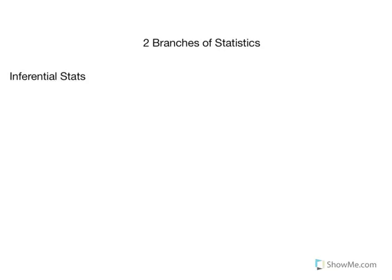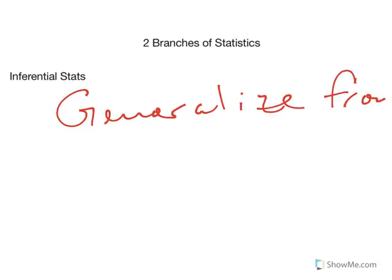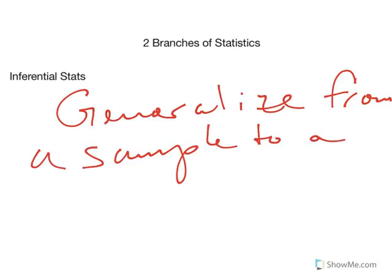Another way to use statistics is the branch called inferential statistics. Inferential statistics do something that is, in a way, much more interesting, more complicated, but also incredibly useful. It's really the backbone of all of psychology. In inferential statistics, the goal is not to summarize data like in descriptive statistics, but to allow us to generalize from a sample to a population.